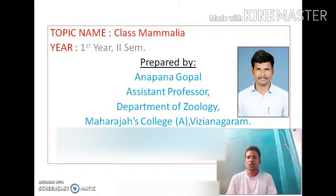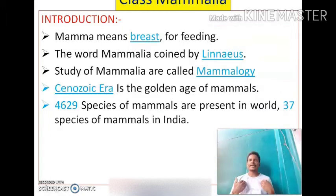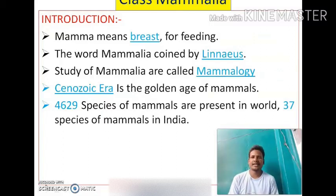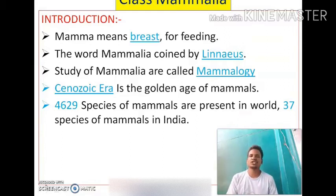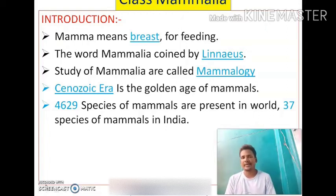There are 4,629 species of mammals present in the world, and 37 species of mammals are present in India. The body is divided into head, neck, trunk, and tail. Mammary glands are present in both males and females, but these are functional only in females. The skin is covered with hair, except in Cetacea — that means whales — and the skin has sweat and sebaceous glands.